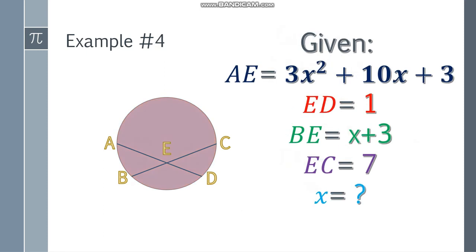Next one. What if we have a complicated problem like this one? We have a trinomial here. AE is equal to 3X² + 10X + 3. And ED is 1, BE is X + 3, and EC is 7. What is the value of X?